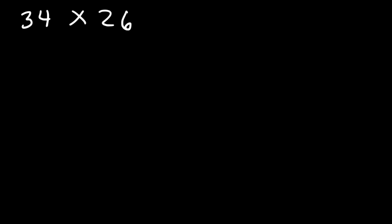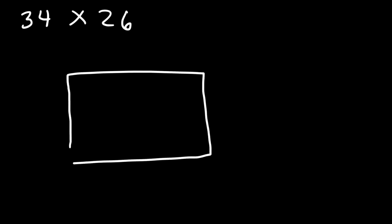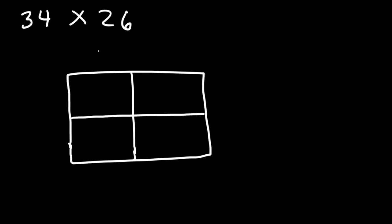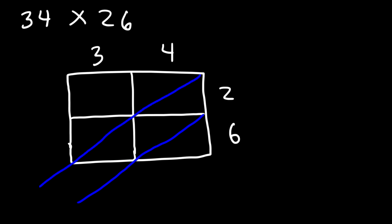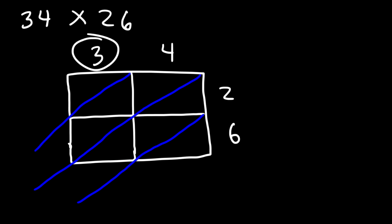How can we multiply 34 by 26 using lattice multiplication? First, notice that we're multiplying a two-digit number by another two-digit number, so we need a table with two rows and two columns. Write the numbers at the top — 3 and 4 — and the other number on the right — 2 and 6. Next, make diagonal lines through each cell, then we multiply.